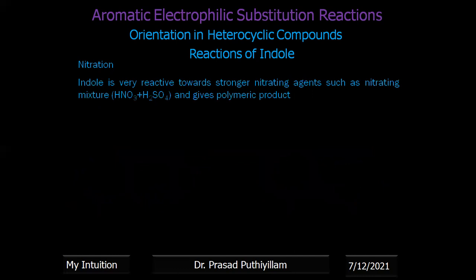Position 3 is more preferred for electrophilic substitution reaction. But if position 3 is occupied, then attack can happen at position 2 or even on the benzene ring. Position 3 is most favored in case of indole. The product is formed based on whether it is position 2 or position 3 — it is very easy.